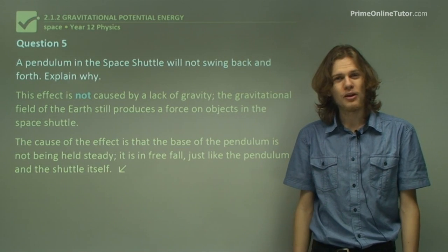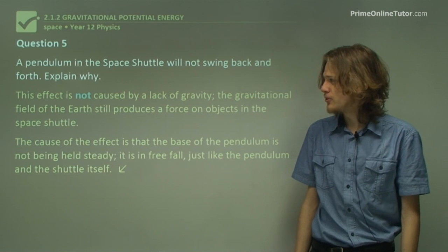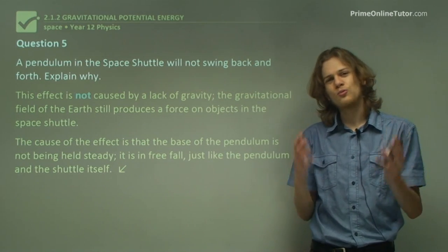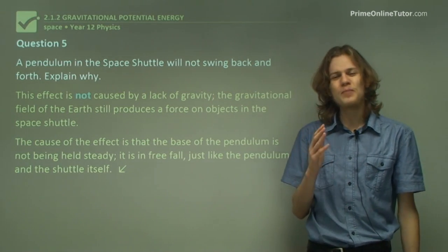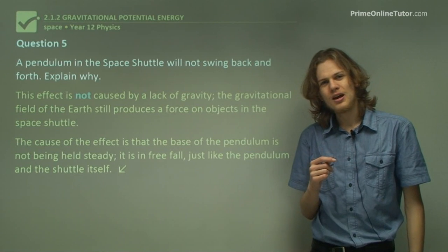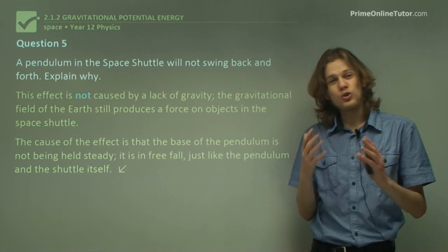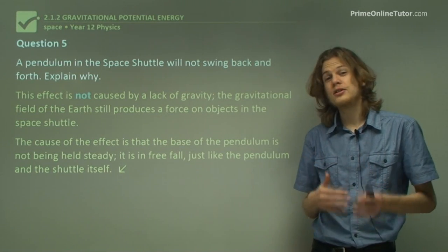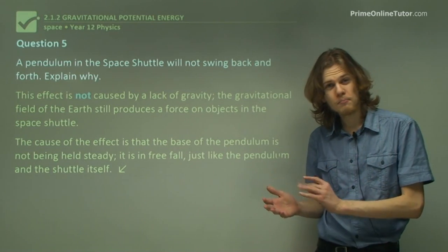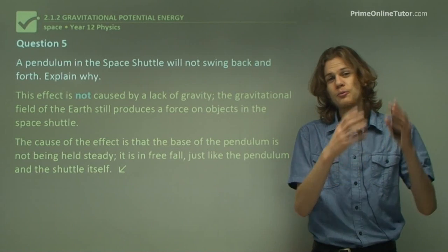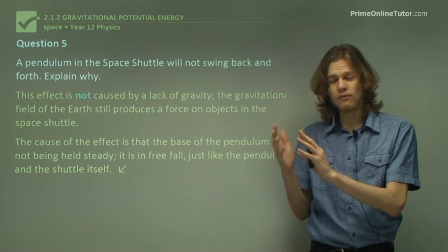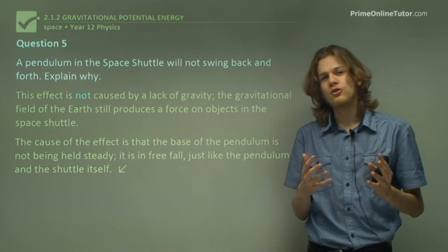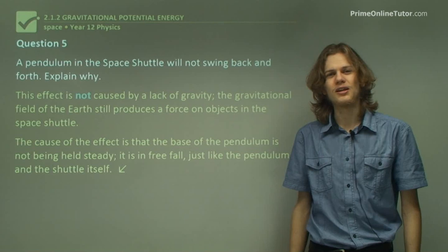So that about does it for the questions. In this section we've learned about gravitational acceleration and exactly how to measure it. Remember that we can do that simply by timing a pendulum and then using an equation to relate the period of a pendulum and the length of the pendulum to the gravitational acceleration.